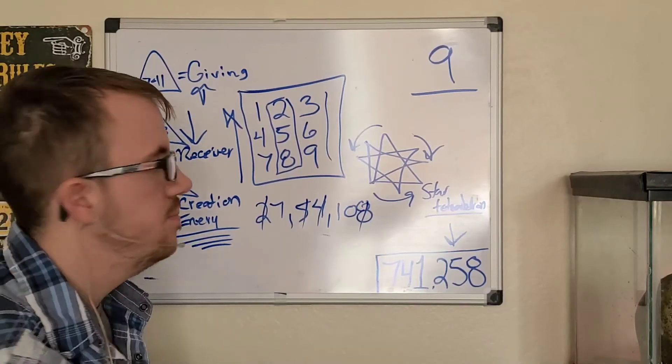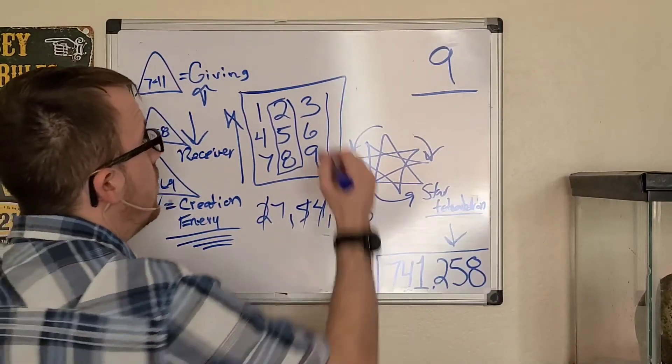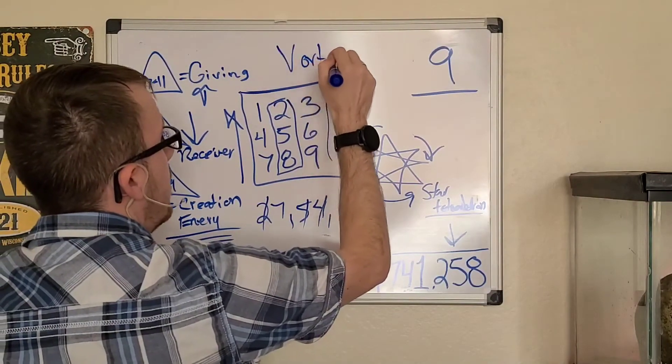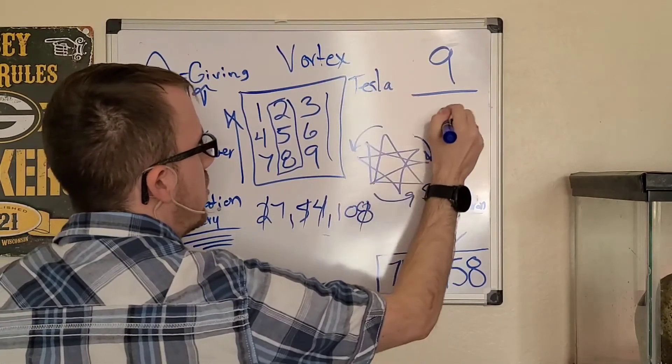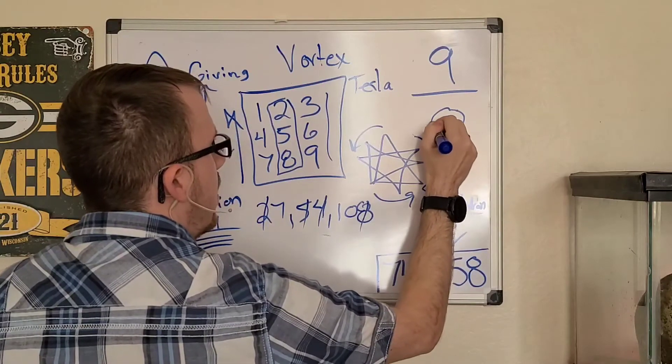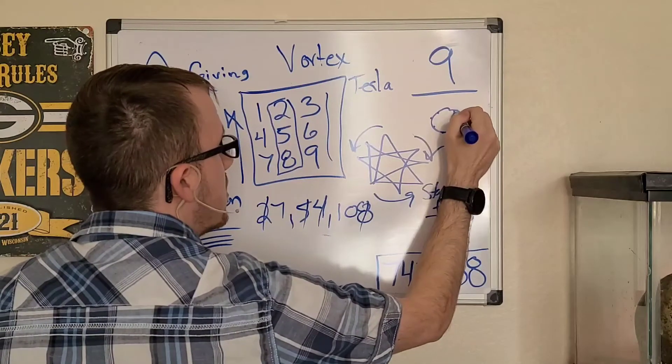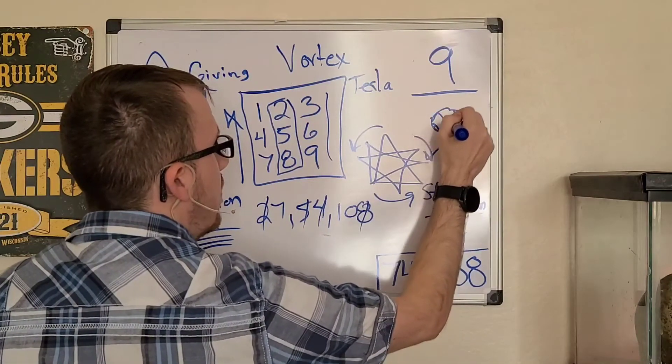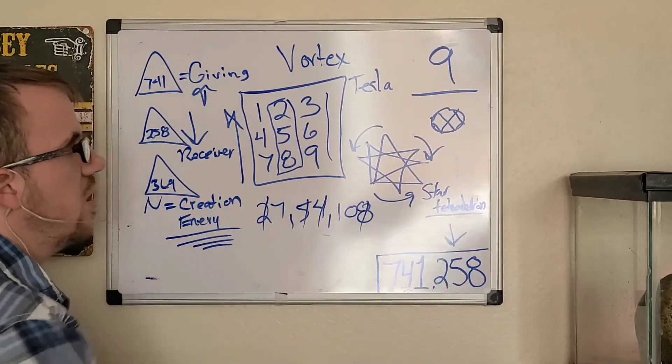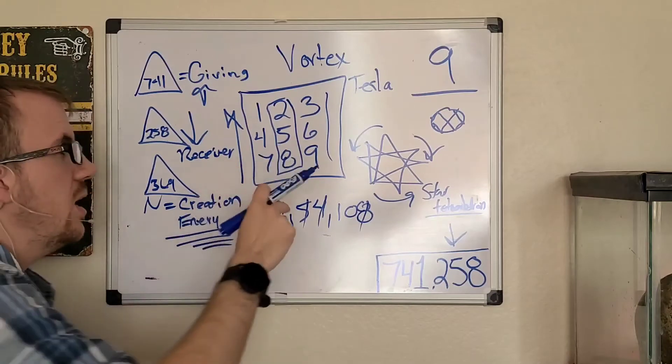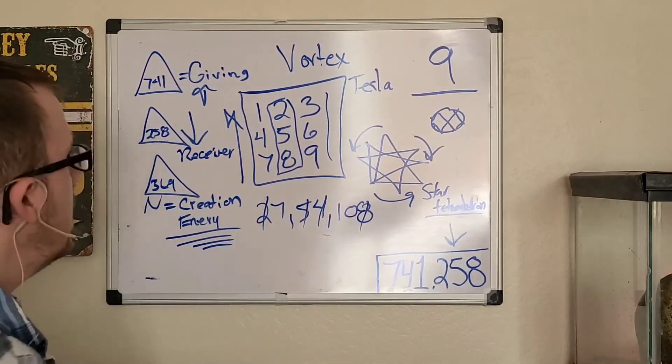This is also, if you want to study vortex math or Tesla, you will find this information, but you'll find it in a circle that has points, and it's basically one, two, four, eight, seven, five, and one. All this information is located in what Tesla was saying, but it's also located at your fingertips on your cell phone and in Egypt in three different pyramids.